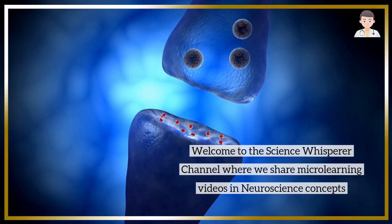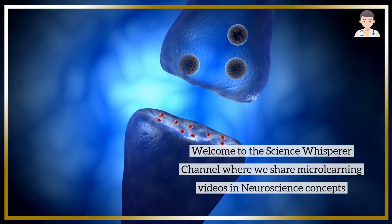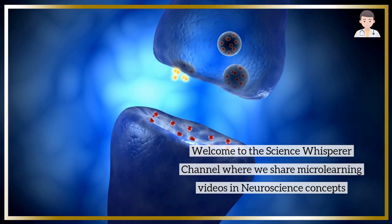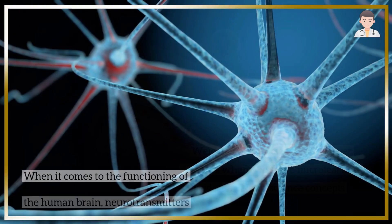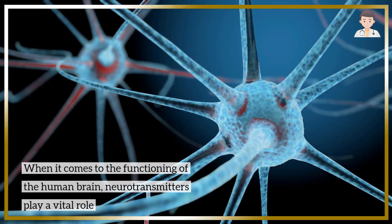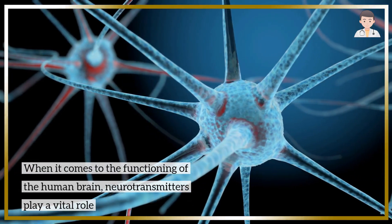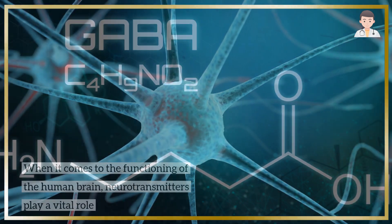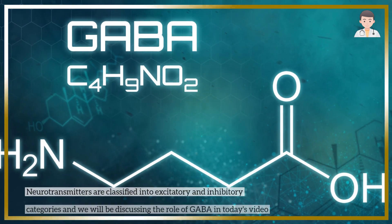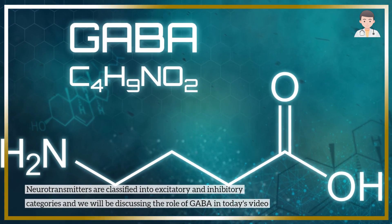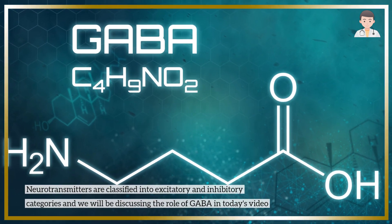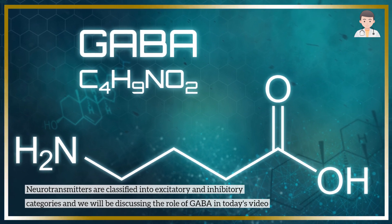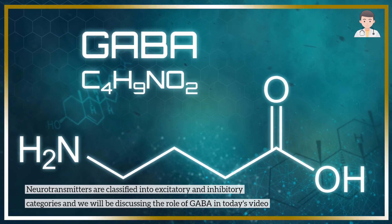Welcome to the Science Whisperer channel where we share micro-learning videos in neuroscience concepts. When it comes to the functioning of the human brain, neurotransmitters play a vital role. Neurotransmitters are classified into excitatory and inhibitory categories, and we will be discussing the role of GABA in today's video.